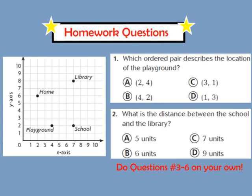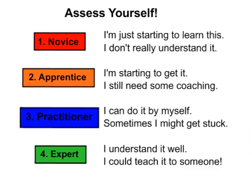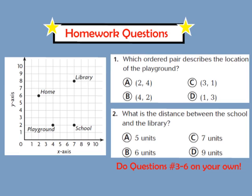For your homework tonight, please complete questions 1 and 2, as well as numbers 3 through 6, found in your GoMath workbook on page 186. Don't forget to assess yourself somewhere on your homework page — are you a 1 (novice), 2 (apprentice), 3 (practitioner), or 4 (expert)? We hope you have a great evening and look forward to seeing you in class tomorrow.